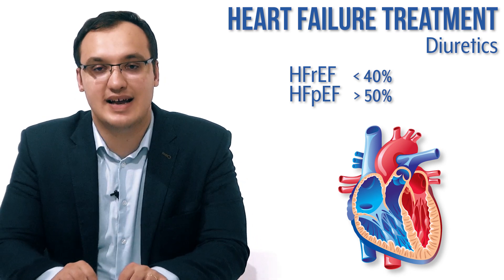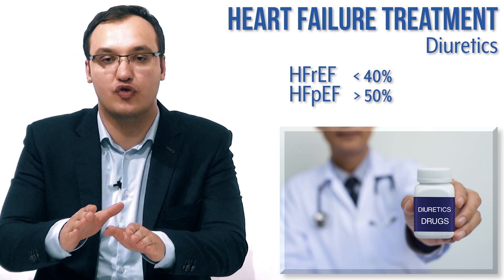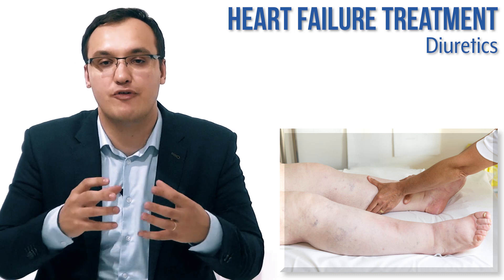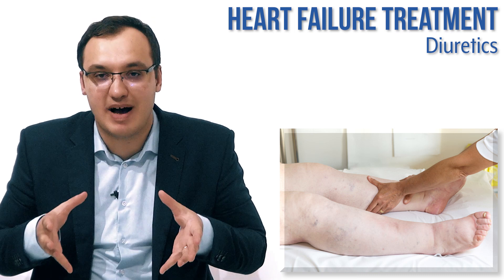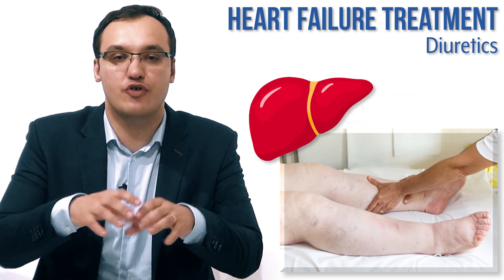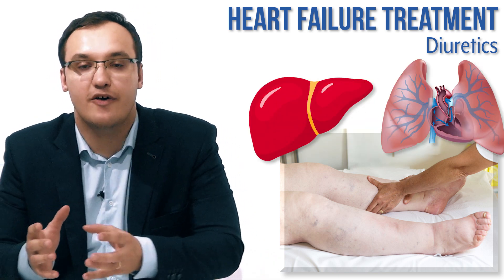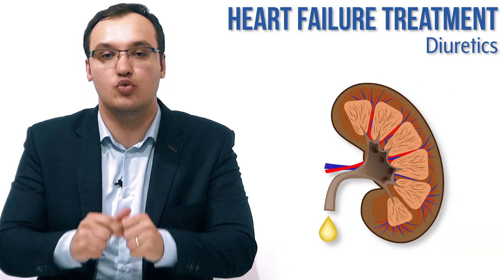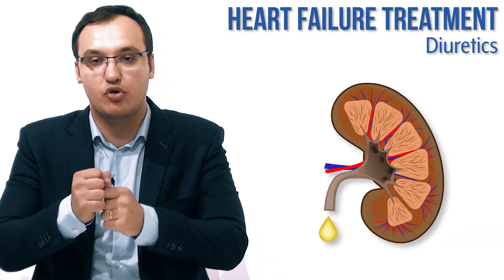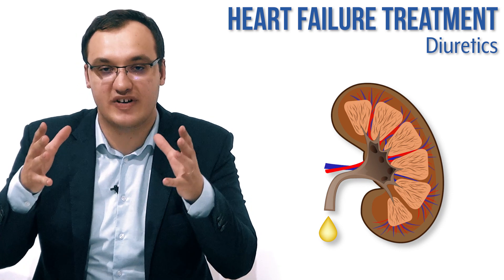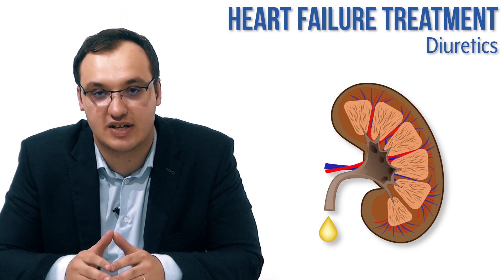Diuretics are used for all groups, for both of these cases, because we can decrease the peripheral edema seen in patients with heart failure. Heart failure will cause edema in the legs, and can cause a lot of congestion - for example, liver congestion or pulmonary edema. Diuretics are medications that flush out the water through the kidneys, taking water from the legs and peripheral edema, so you will not have this high amount of edema and severe symptoms from heart failure.